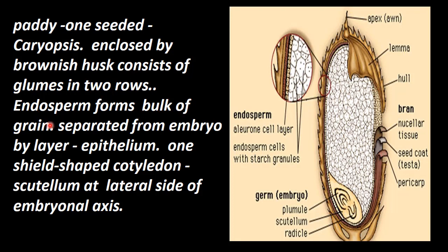Endosperm forms the bulk of the grain. This whole portion is the endosperm. It is separated from the embryo by a single layer of tissue, called the epithelium.